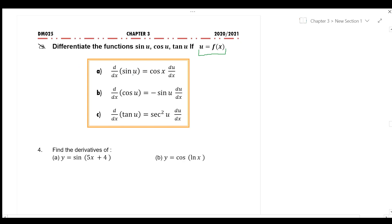For differentiation of sine u, it becomes cos u multiplied by the derivative of function u.